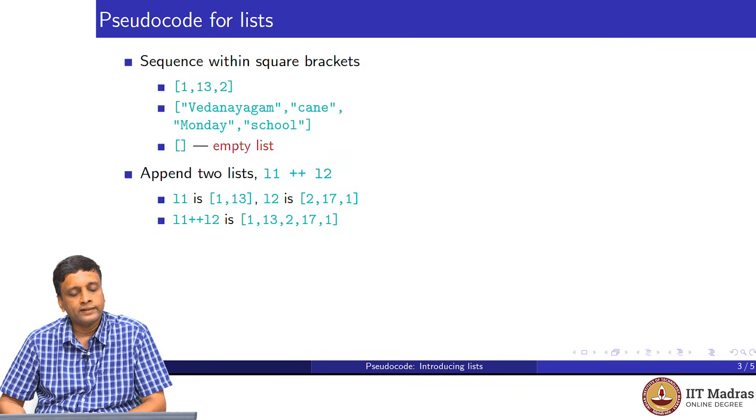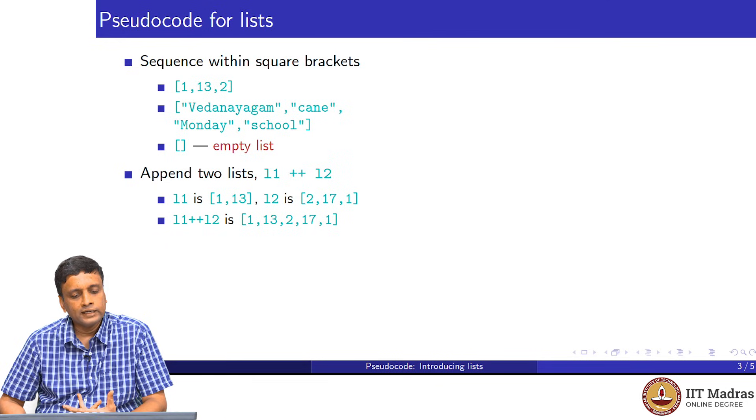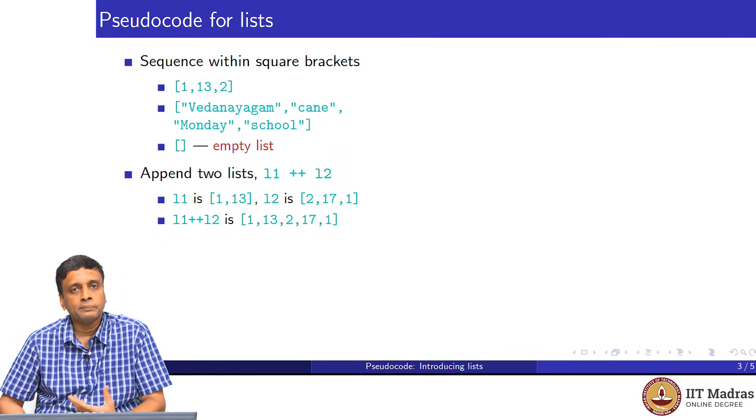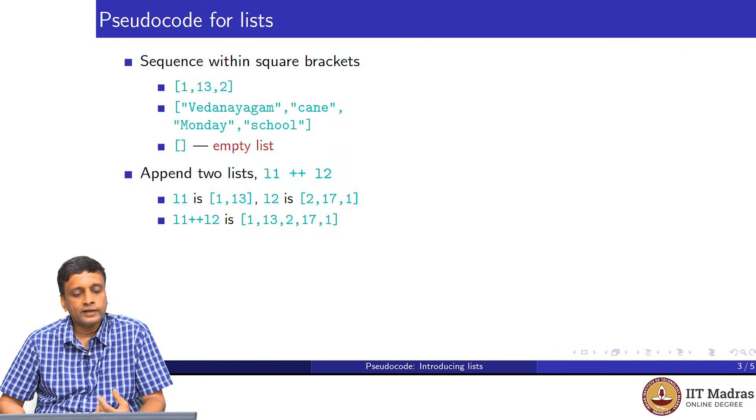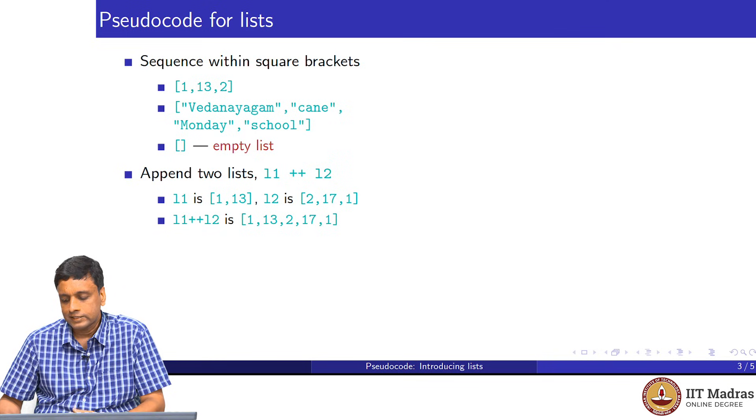For example, L1 is 1 and 13, it has two elements, and L2 has 2, 17, and 1. Remember that in a sequence, the order is important. This is not a set, this is a sequence. And in a sequence, things can be repeated. We have 1 and 13 in L1, we have another one in L2. If we put it together, we get 1, 13, followed by 2, 17, and 1 as a single 5 element list, starting and ending with 1. This is how we combine lists together.